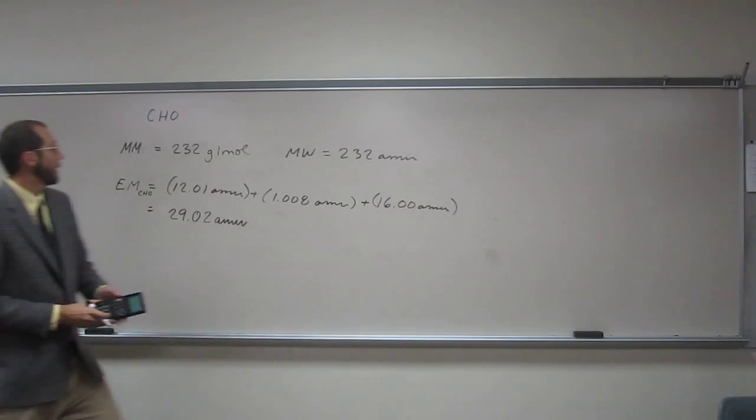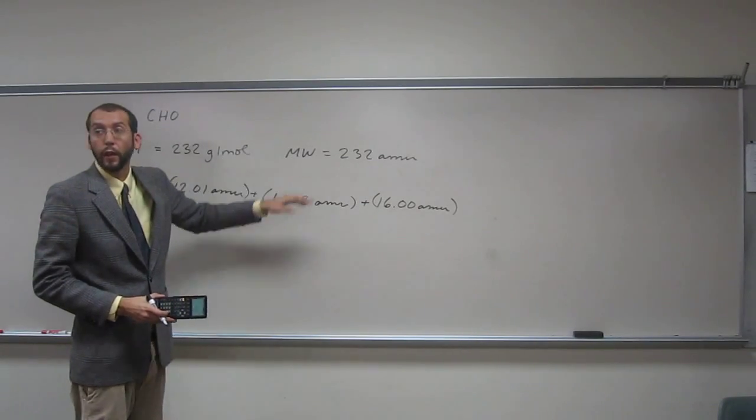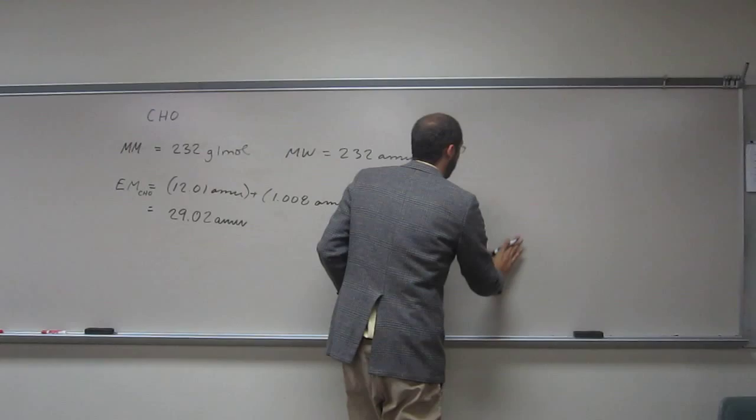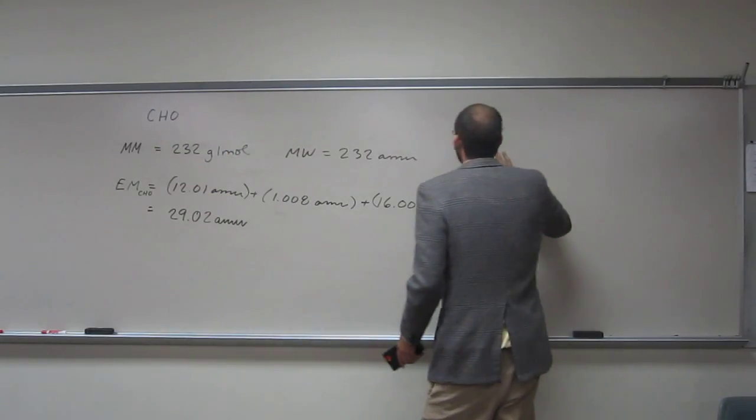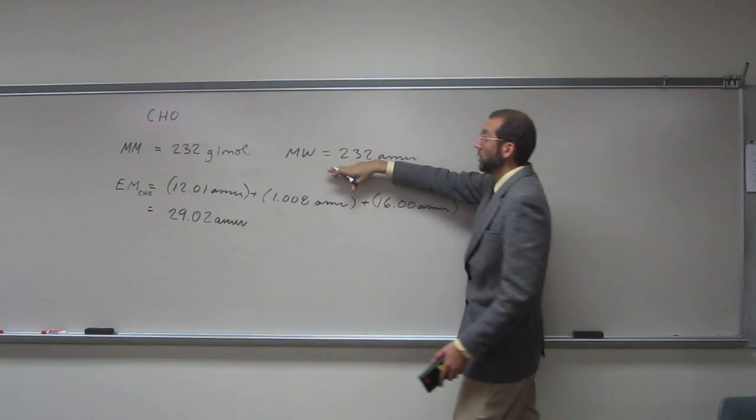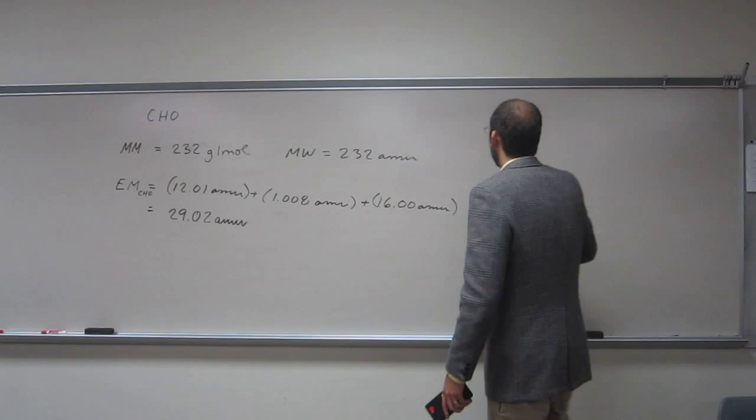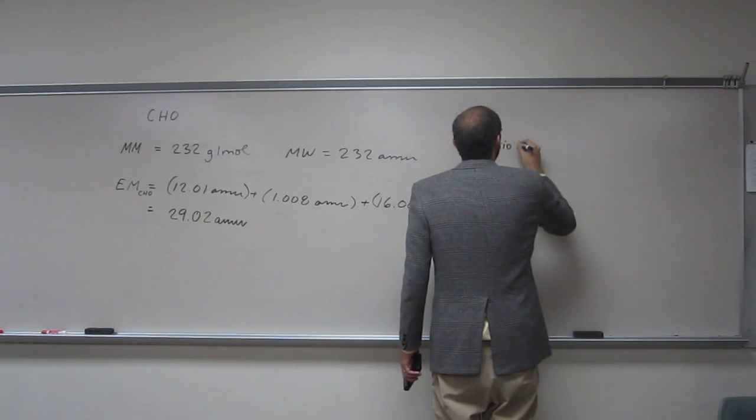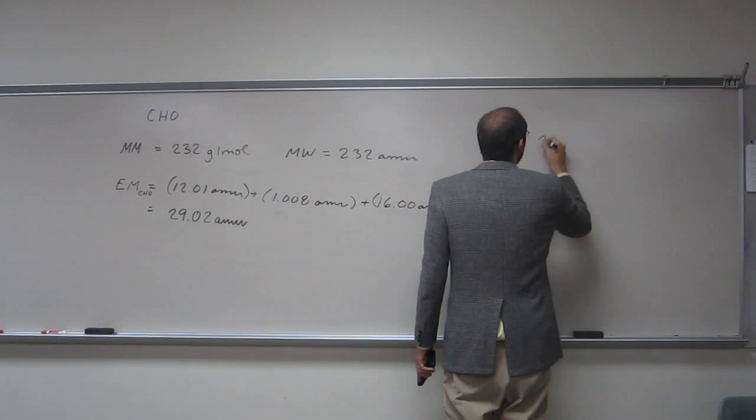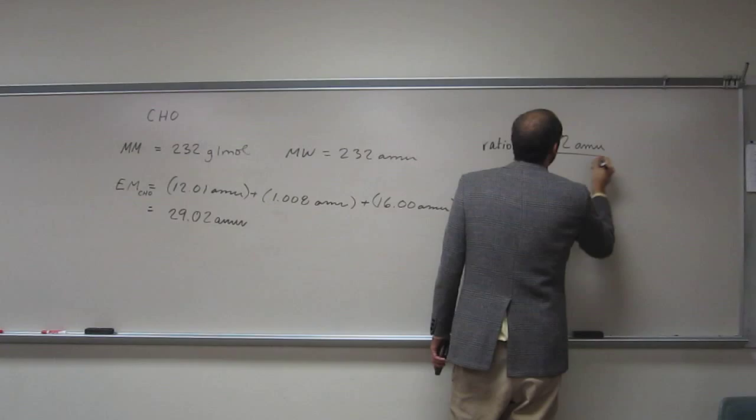And we got the molecular weight of the compound itself. So what we need to do now to figure out what is the molecular formula of this thing is we need to create a ratio using the molecular weight and the empirical mass. So the ratio is going to be the bigger of the two numbers over the smaller.